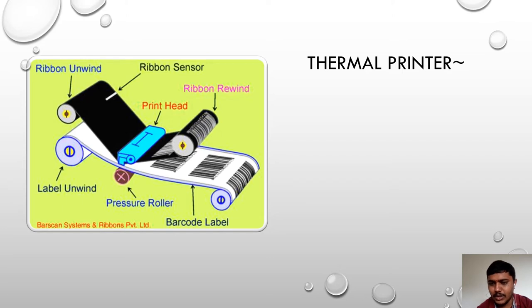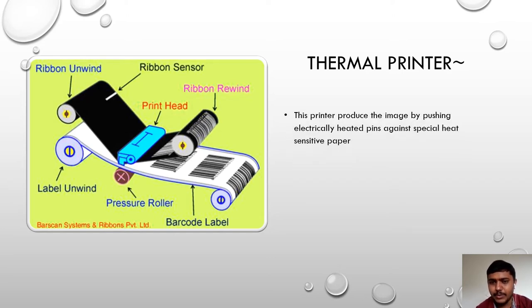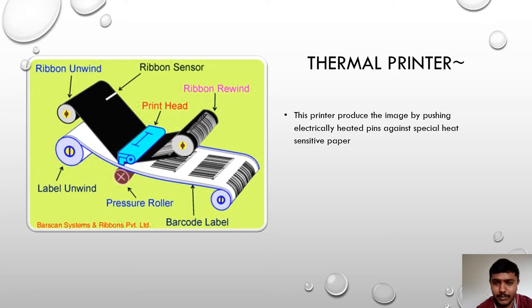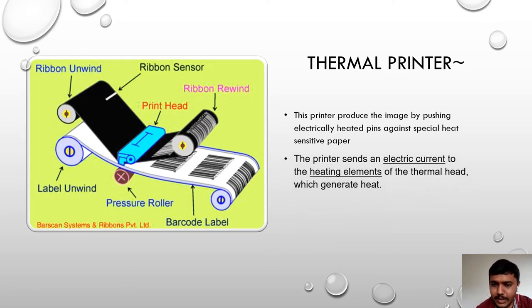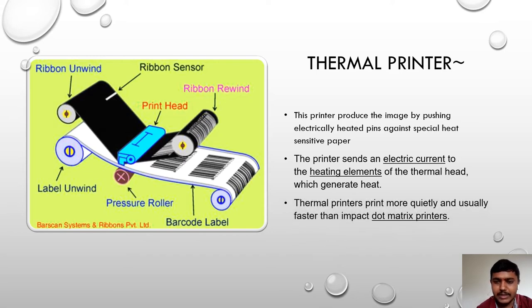A thermal printer produces an image by pushing electric heat pins against a specific heat-sensitive paper. The paper going inside the printer is a heat-sensitive paper. The print head ejects heat, by which the images are formed. The printer sends an electric current to the heating element of the thermal head, which generates heat. The thermal printer is quieter and usually faster than a dot matrix printer.